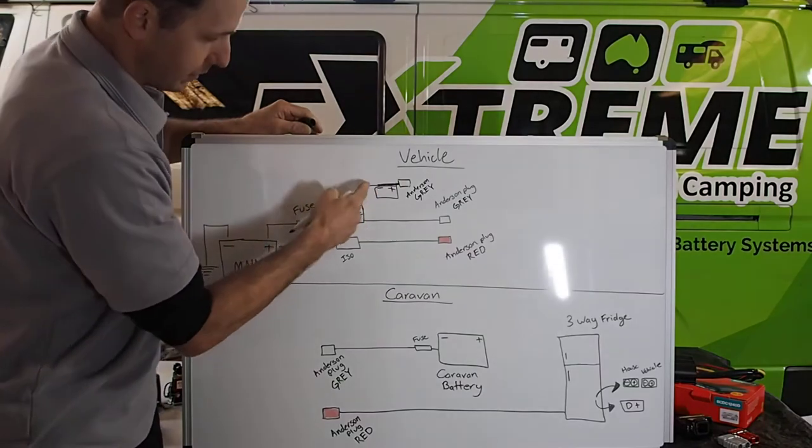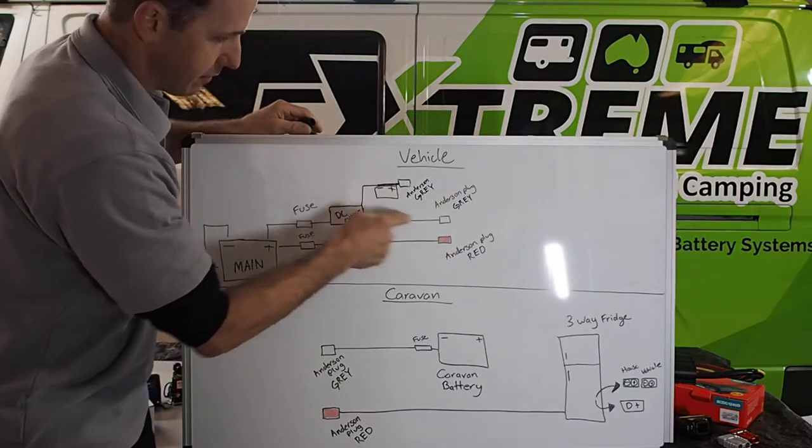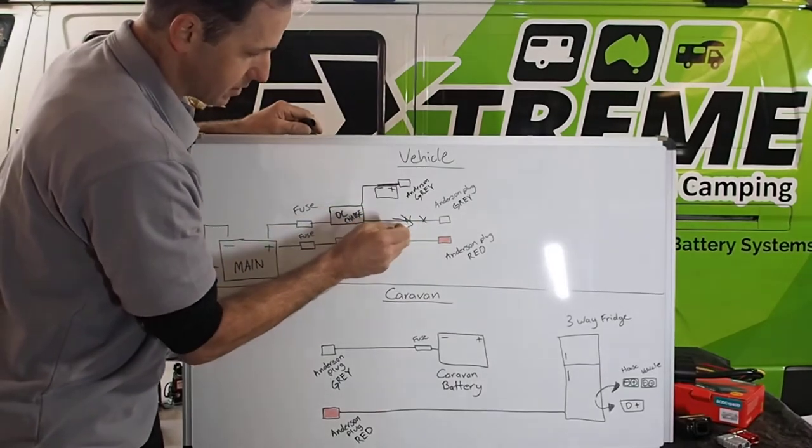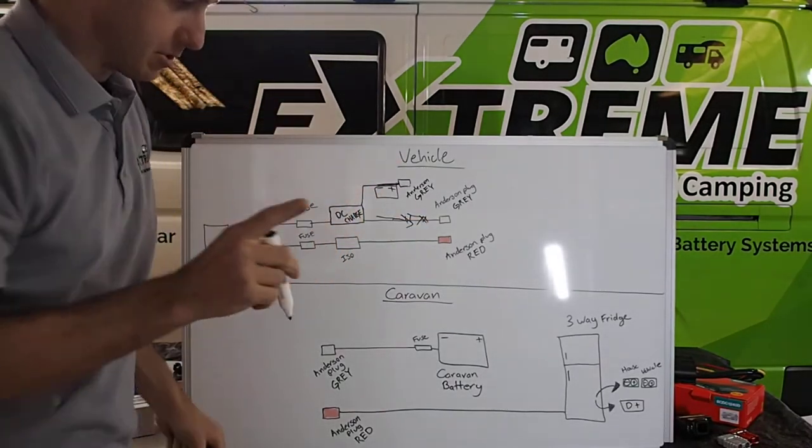14.4 volts coming through. This line is the same. So, that voltage is going to be replicated at this point. The power is going to go that way. Now, this really gets interesting.